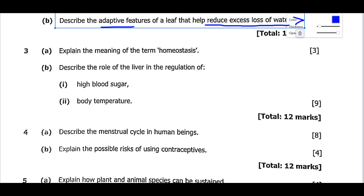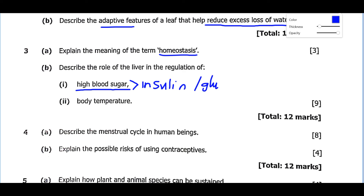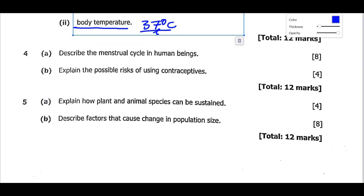Question 3A asks you to explain the meaning of homeostasis — this has to do with balancing water and salt ions. Then describe the role of the liver in the regulation of high blood sugar, where we need to look at hormones such as insulin and glucagon, which work opposite to each other. Also cover body temperature: the normal body temperature is 37 degrees Celsius. High temperature may denature enzymes, while low temperature may make enzymes inactive.